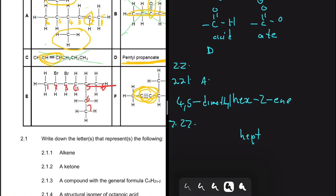Compound E is an alkane — every carbon is essentially the same, so there's no functional group suffix to add beyond 'ane'. For an alkane we simply say 'heptane'. You only add a positional suffix when you have an alkene, alkyne, or other functional groups.